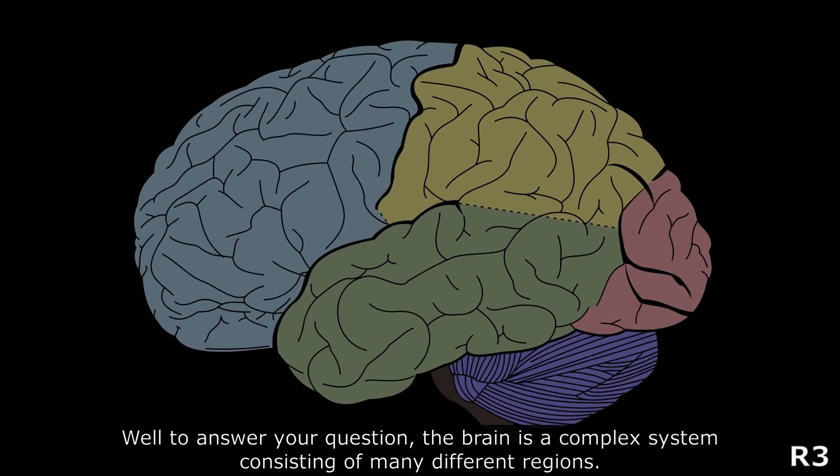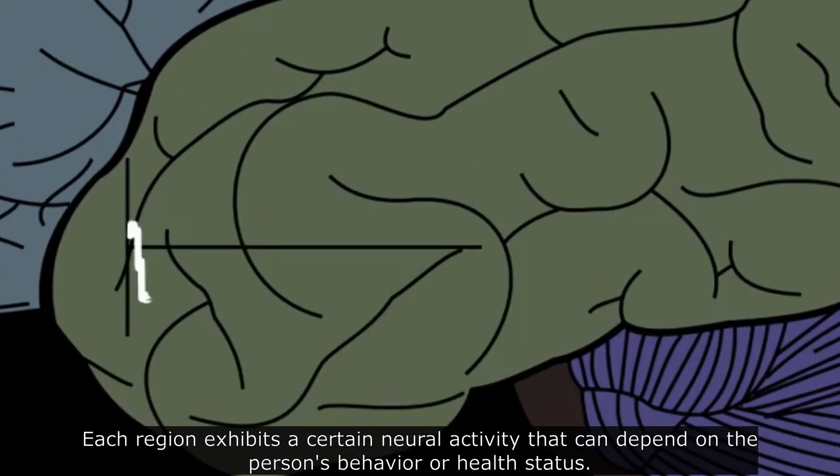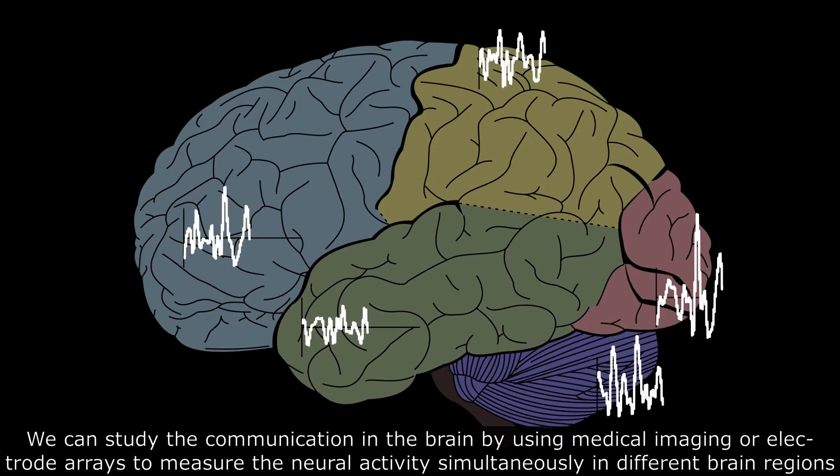But how can we study communication in the brain? Well, to answer your question, the brain is a complex system consisting of many different regions. Each region exhibits a certain neural activity that can depend on the person's behavior or health status. We can study the communication in the brain by using medical imaging or electrode arrays to measure the neural activity simultaneously in different brain regions.